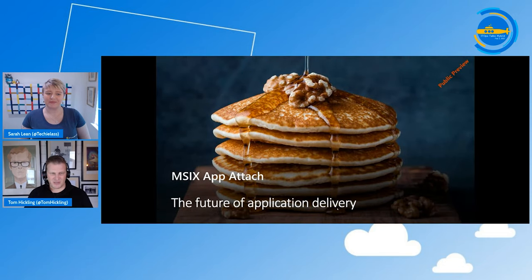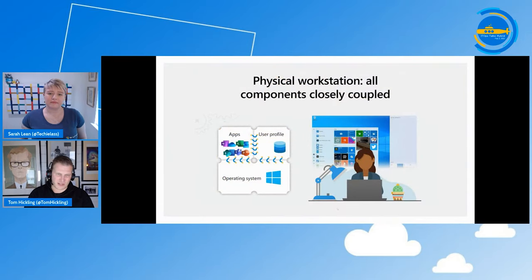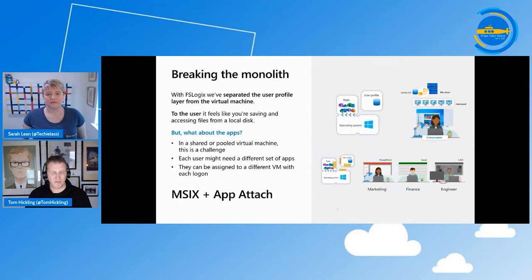Let's start with MSIX App Attach. This slide with the pancakes is there to denote a layering capability. There are lots of layers involved in virtual desktop, and this is the ability to separate those layers out. We call it the future of application delivery, because that's our view of how we get applications to virtual machines in a more dynamic and efficient manner. On a physical device, a user's profile — their persona — is intrinsically linked to the OS, as are all applications, such that if a user gets a new laptop, they can't expect everything to be there as they left their previous laptop. That's the problem we're trying to resolve — we call it breaking the monolith.